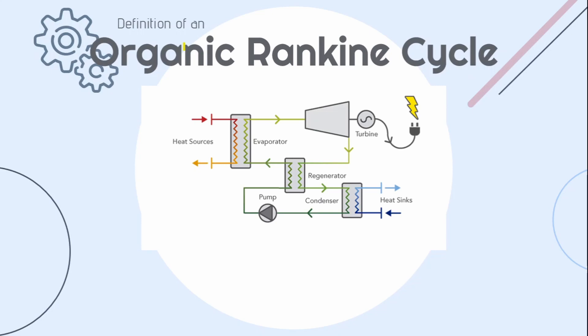Since organic ranking cycles generate power from low temperature heat, they can be implemented as power generation units for waste heat recovery systems, geothermal applications, and solar applications. These applications produce a small amount of electricity, therefore organic ranking cycles are ideal for small scale power generation applications.